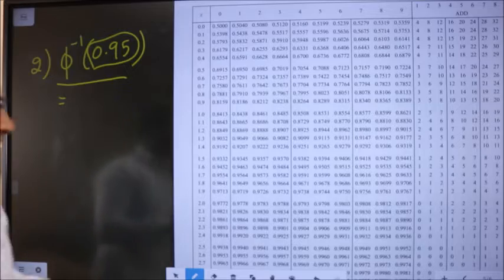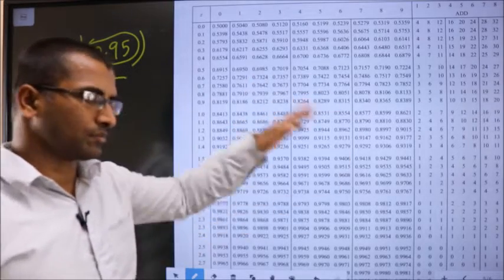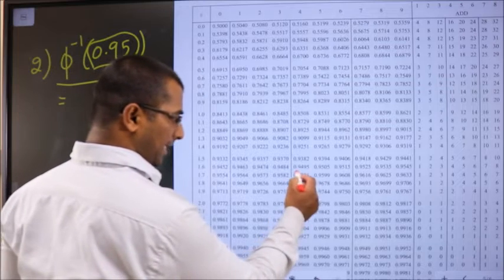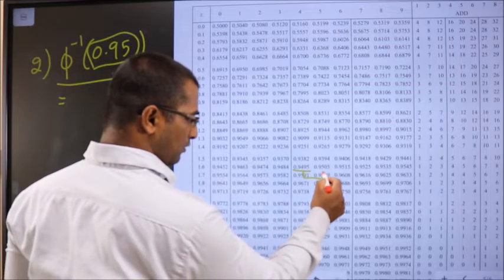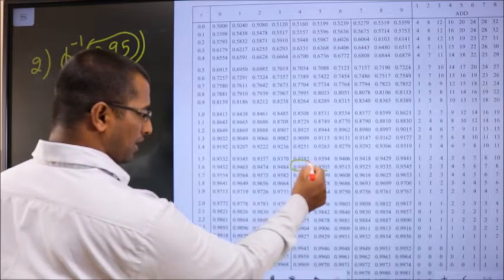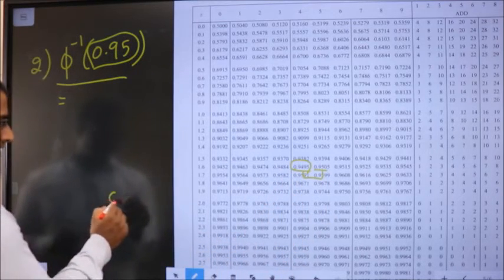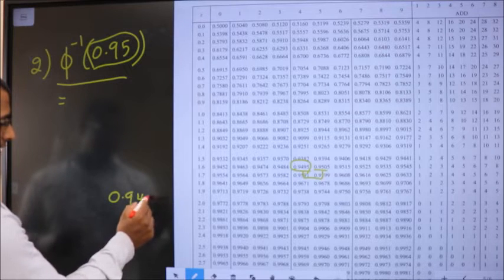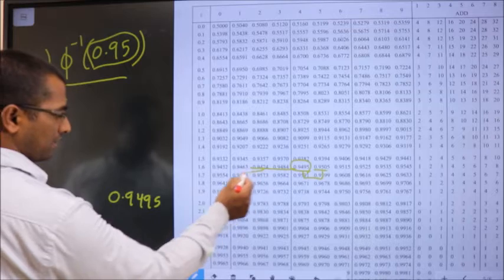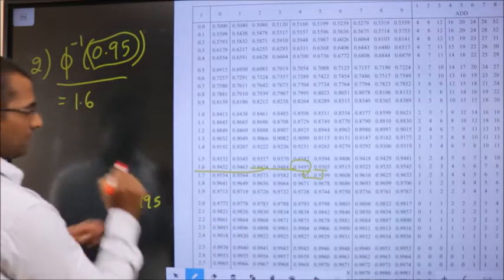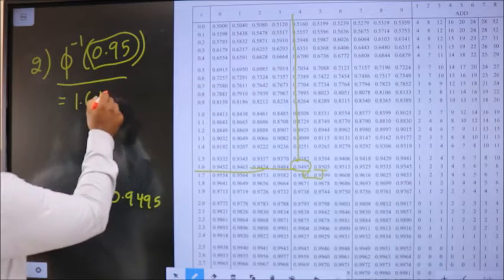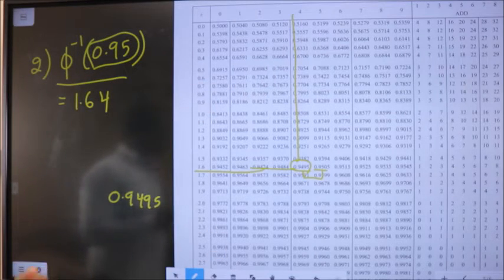Now I want to find phi inverse of 0.95. Since it's inverse, I need to look for 0.95 in the table body. 0.95 lies between two values — one smaller, one greater. I select the smaller one, which is 0.9495. This is present at row 1.6 and column 4, so 4 becomes the second decimal.